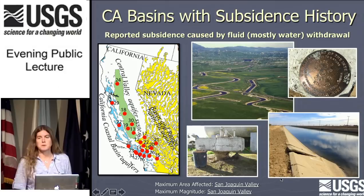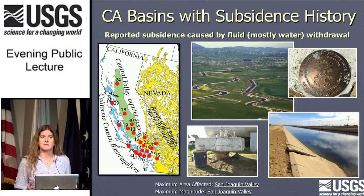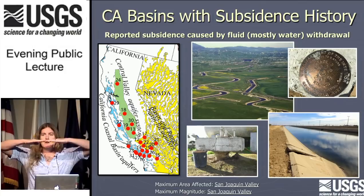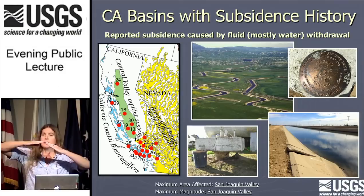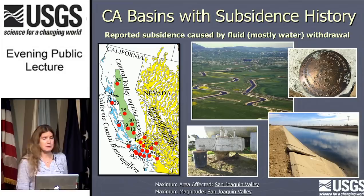This image on the lower right is the Delta Mendota Canal, and you can see a rupture in the concrete lining of the canal. We don't know for sure that subsidence caused this rupture, but it's in a suspicious location because this area has been affected by differential subsidence — subsidence that happens in different places at different rates. If you have one area that's subsiding and one that's not, any infrastructure that crosses this area that isn't really flexible is going to break. So this is an example of what can happen.